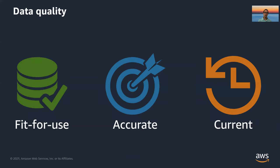Data is not really useful if the quality isn't good. Before users can do anything with this data, they need to clean it — replacing missing values, fixing timestamps, and things like that. They need to make it really fit for use. It's a process that takes time and effort and is repeated for almost all data sets unless there's an automated process designed to clean the data. Data also needs to be accurate.